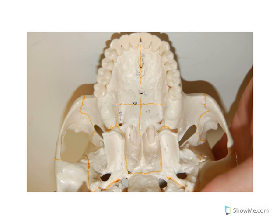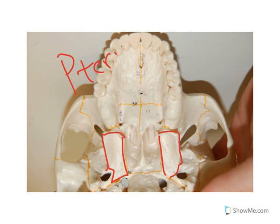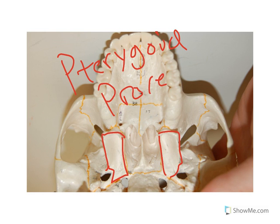You can see these structures here of the sphenoid bone, and these are called the pterygoid processes. There are two pterygoid processes there.